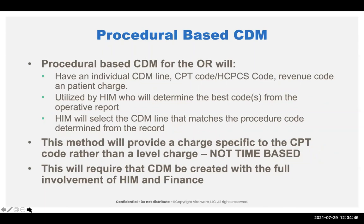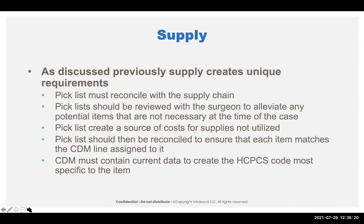Procedure-based CDMs in the OR are something I tend to see more in ambulatory surgery areas where they do a limited list of procedures and want it hard-coded, with the physician assigning the code. This is a separate approach where you'd actually put in the CPT code and the weight. The preference is to have HIM code based on the materials in the medical record. This approach gives you a flat fee for the procedure. The supply pick list has to be reconciled with the supply chain. Pick lists should be reviewed with the surgeon to remove potential items not necessary at the time of the case. If they just say yes walking out the door and never look at it, ask the question again.